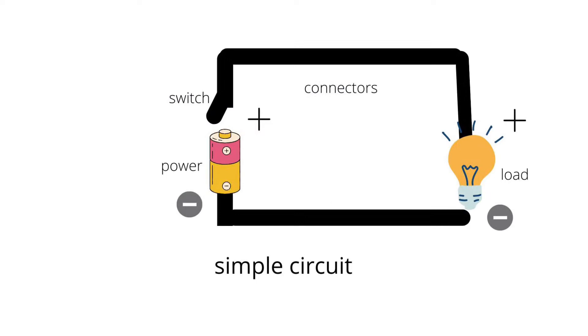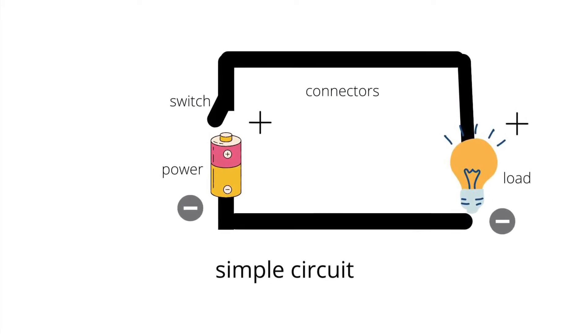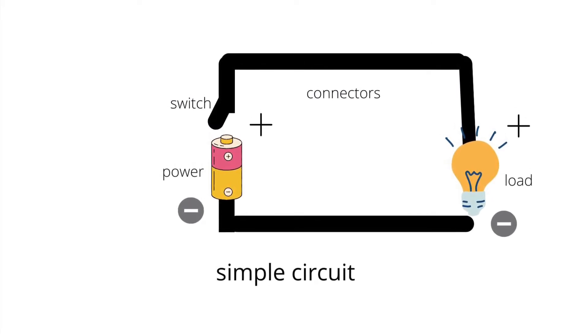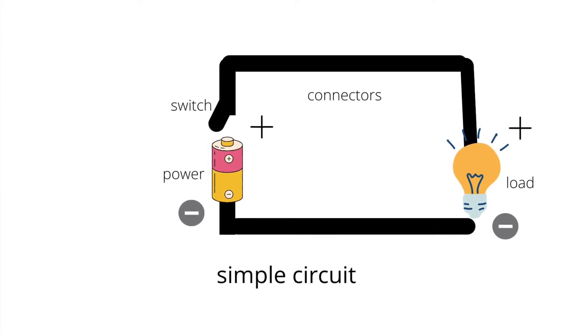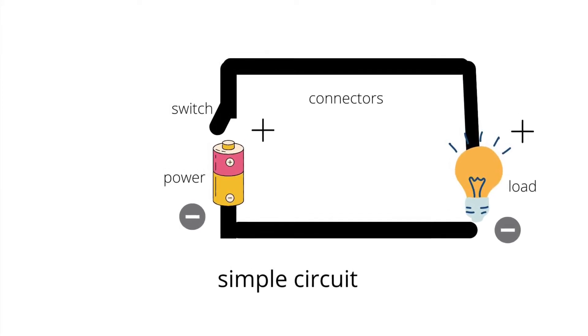Here's a diagram of a simple circuit like the one we're going to make. The battery is the power source, the switch connects to the battery, wires are the connectors, and the light bulb is the load.